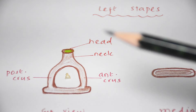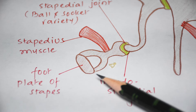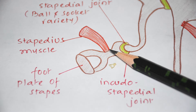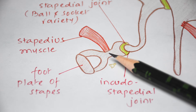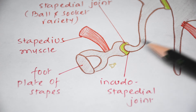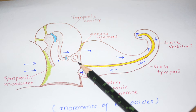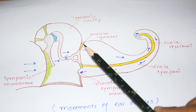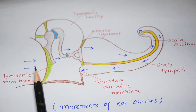The neck of the stapes posteriorly receives the insertion of the stapedius muscle, which is supplied by the facial nerve. The stapes is a derivative of the second pharyngeal arch, whereas the malleus and incus are derived from the first pharyngeal arch. The two diverging crura are connected to the footplate or base. The footplate is connected to the margins of the fenestra vestibuli via the annular ligament.